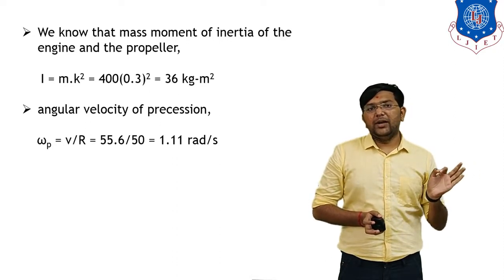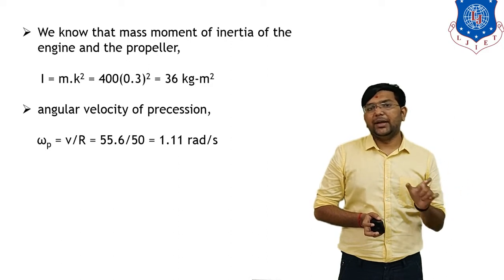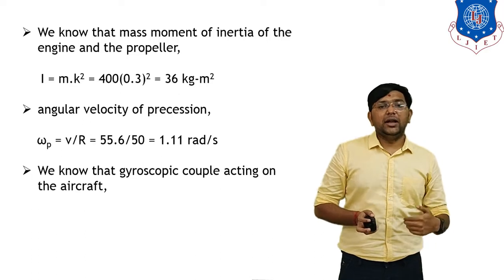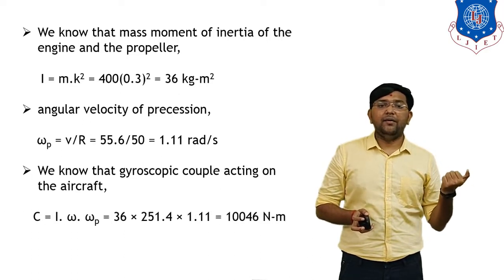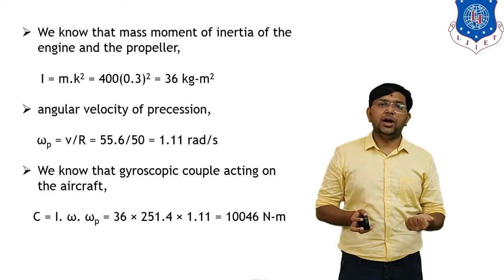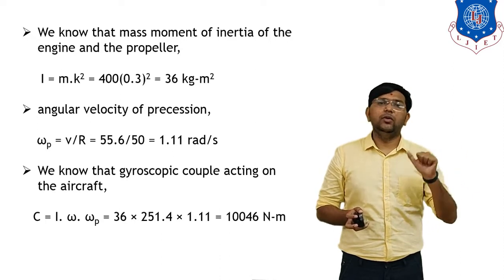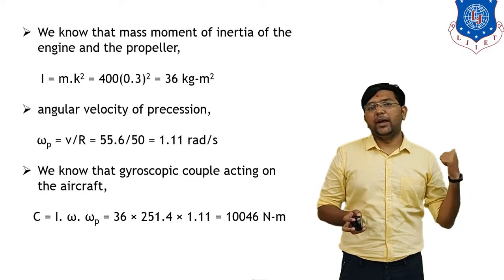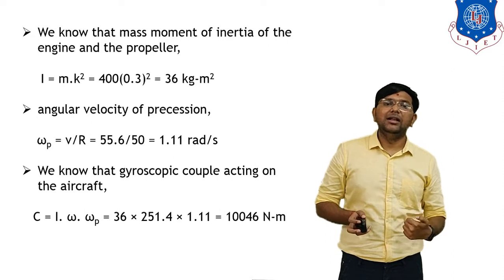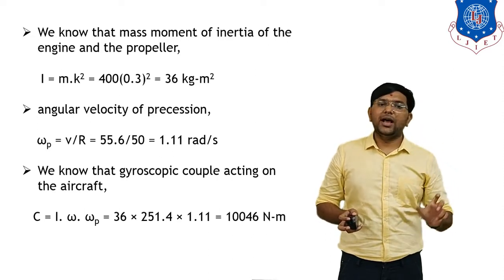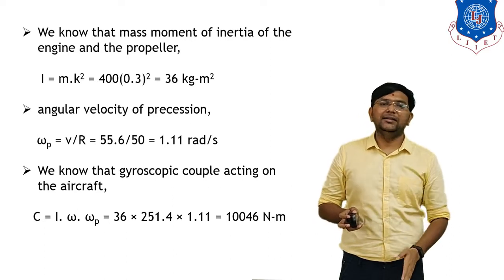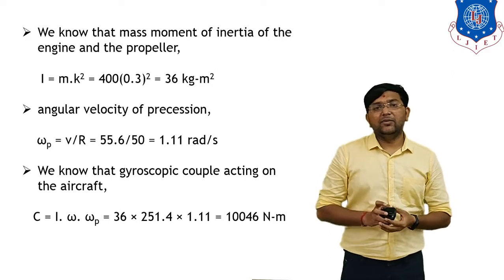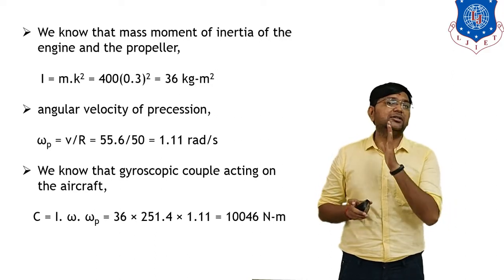Now we have all three values: I = 36, ω = 251.4, and ωp = 1.11. The gyroscopic couple acting on the aircraft is C = I·ω·ωp = 36 × 251.4 × 1.11 = 10,046 N·m. This is the answer for the reactive gyroscopic couple.